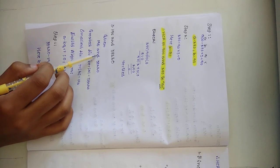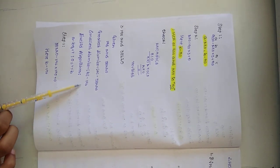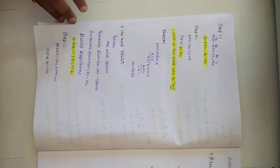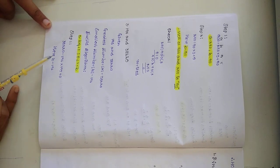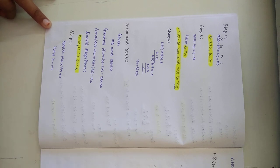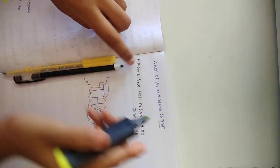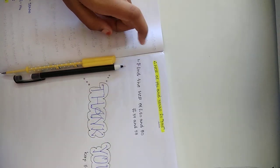Let us move to the third example. The given values are 196 and 38,220. The greatest number is 38,220 (A equals 38,220) and the smallest number is 196 (B equals 196). Using Euclid Division Algorithm, Step 1: 196 into 195 equals 38,220, so the remainder is 0. Here B equals 196, so the HCF of 196 and 38,220 is 196.